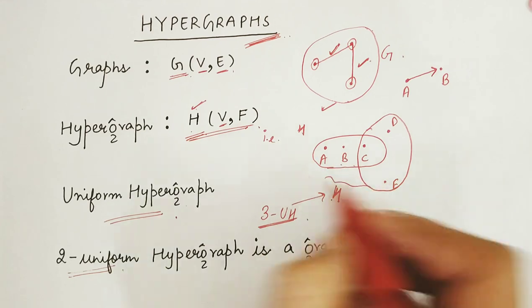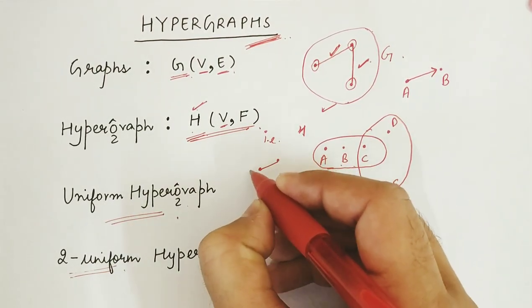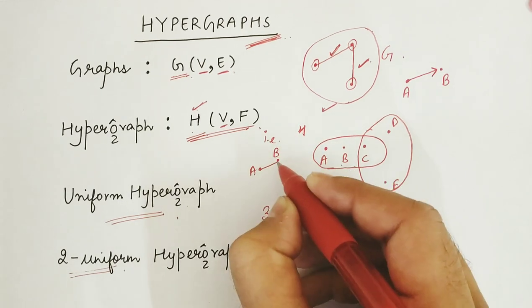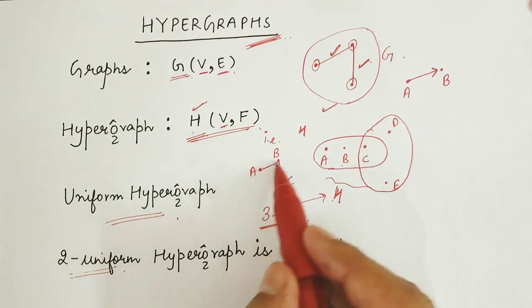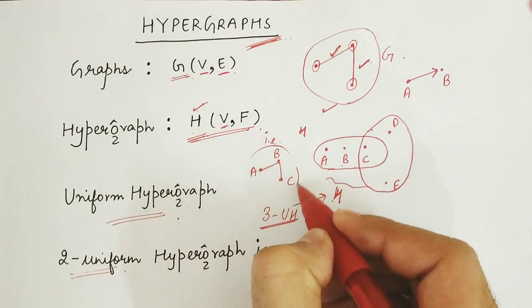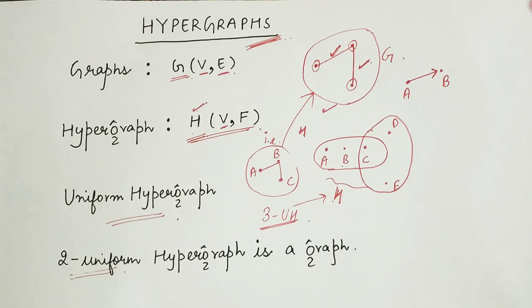As we can see that if this hypergraph would have been A, B and C, where all these hyperedges were of size 2, then this hypergraph reduces to this graph.